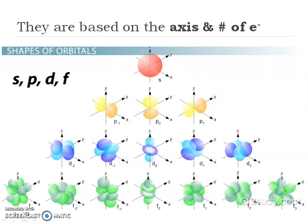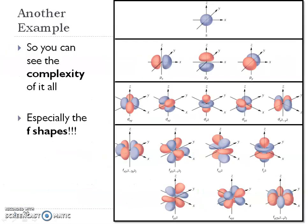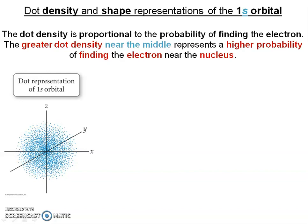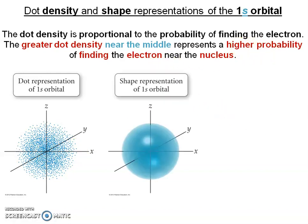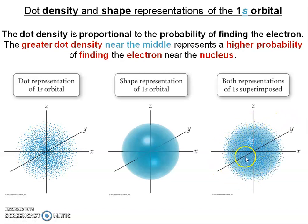I like this picture because it shows you — for those who really like 3D models — where those shapes are coming into play, though the F is really crazy. The dot density shows that those dots are proportional to the probability of finding that electron. For the S, the greater the dot density near the middle means the highest probability of finding the electron near the nucleus, which is why we give it a sphere shape. Comparing 1S versus 2S: they're both spherical and hold two electrons, but the 2S is larger than the 1S.